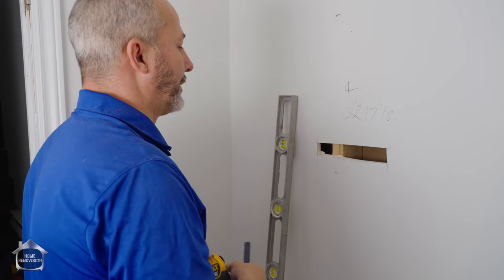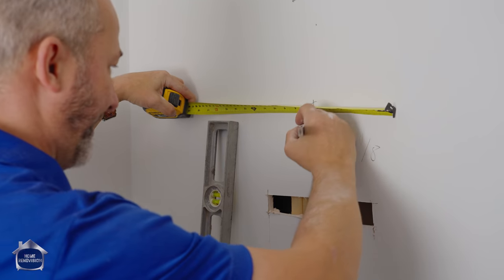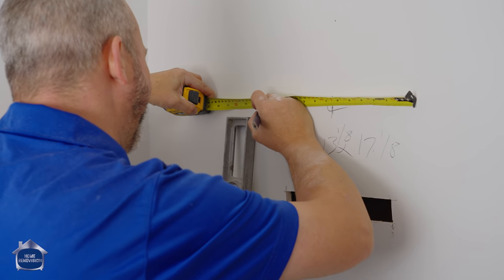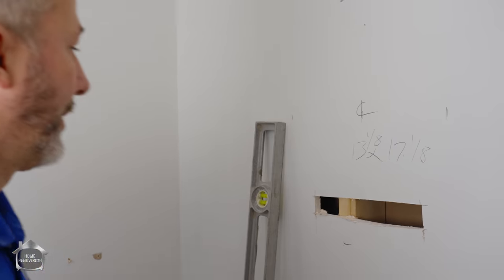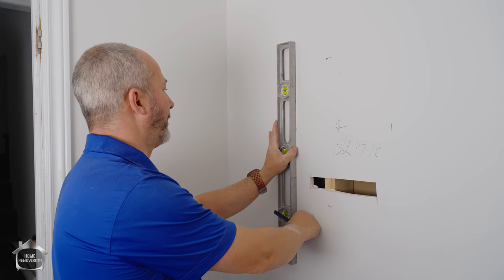Now all we got to do is take 13 and an eighth divided by the center. What's half of 13 and an eighth? Six and a half and an oomph. So I got all four sides now. So now I'm just going to use my level and put it up against the wall, make it level.